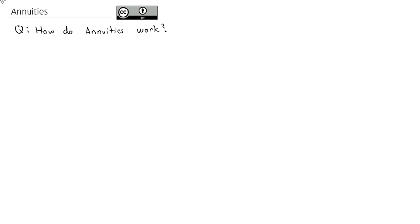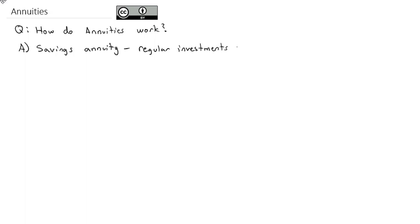This is like your classic retirement account. You're going to put maybe $100 or $200 a month into an account every month for 40 years, and then at retirement you want to know if you're going to have enough to live comfortably. This type of investment is called a savings annuity because we're putting money in — we're making regular investments over time.